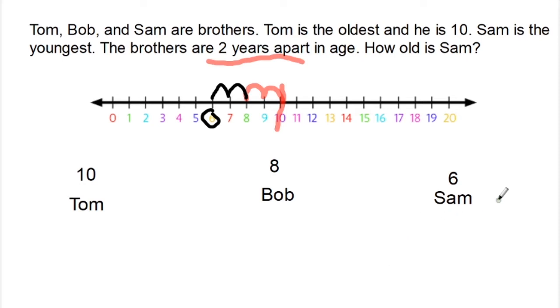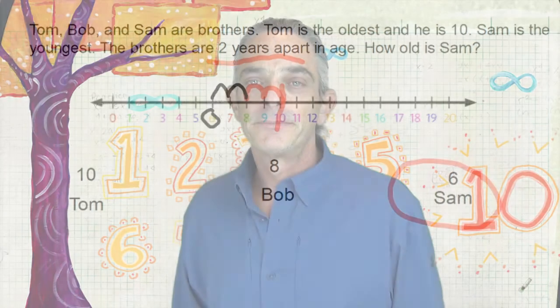The answer to our question: Sam is six. So there you go — working backwards to solve for Sam's age. Don't you love this stuff? Let's check out another problem.